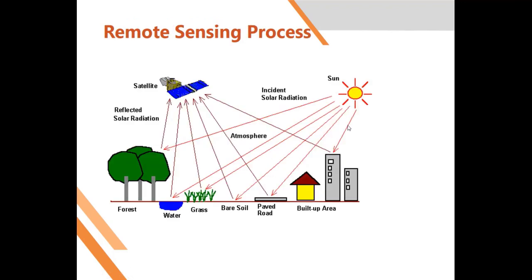Now the remote sensing process: we have a satellite, the earth's surface, the sun, and objects on the earth. This is passive remote sensing. When the sun shines, it sends electromagnetic radiation to the earth's surface. This radiation hits the surface, reflects toward the satellite, and the satellite records it. However, when it reaches the atmosphere there are interactions — some energy is absorbed, some is scattered — and the energy that reaches the sensor is recorded, calibrated, cleaned, stored, and shared as an image.